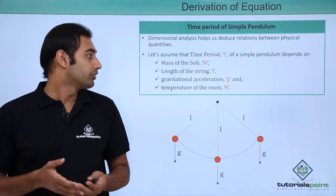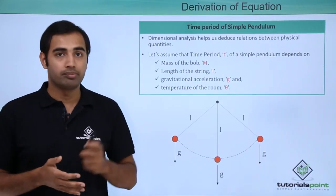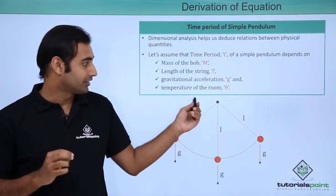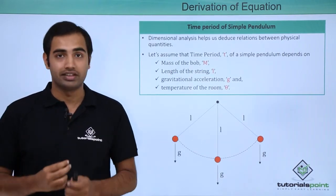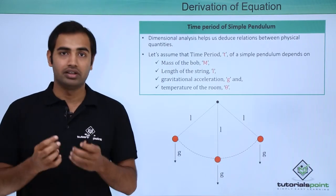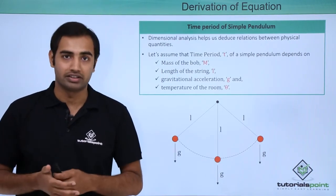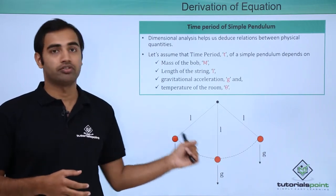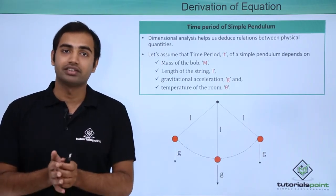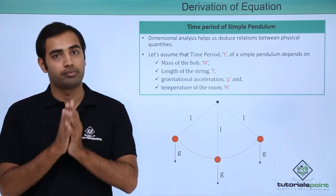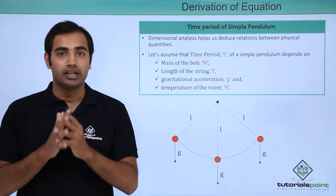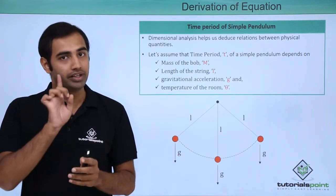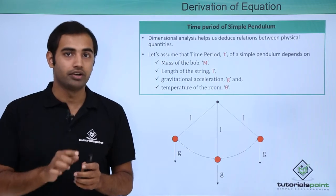So let's start off. We have a simple pendulum which has a bob of mass m and it has a string of length l, which is under normal earth's gravity, has a gravitational acceleration of small g. Now this pendulum is swaying from one end to the other, and we are interested in calculating the time period of a pendulum. If you don't know about the time period, it is simply the time taken by the pendulum to complete one complete oscillation.